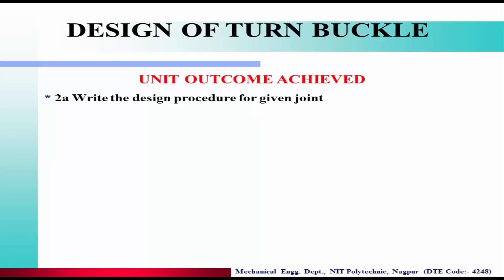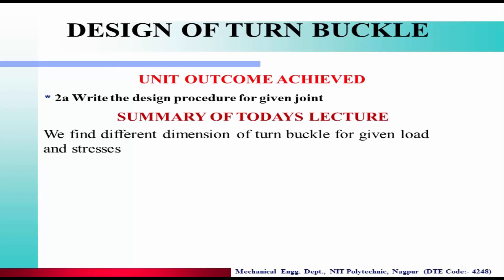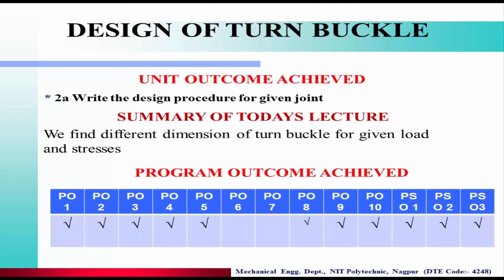The unit outcome achieved in today's lecture is: write the design procedure for a given joint. Here we were able to write the design procedure of a turnbuckle and solve for its various dimensions. In the summary, we found different dimensions of the turnbuckle for given load and stresses. PO1 is satisfied because we used basic science and mathematical knowledge to calculate the various stresses acting in the turnbuckle.